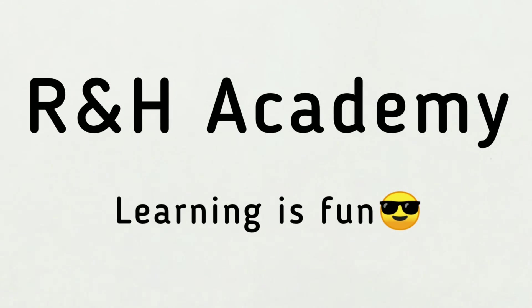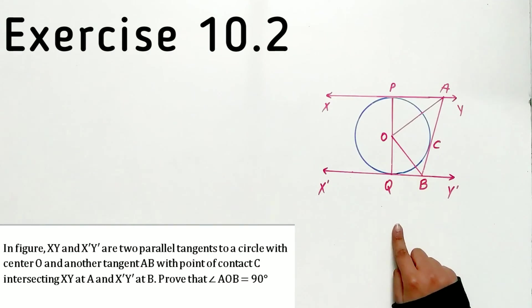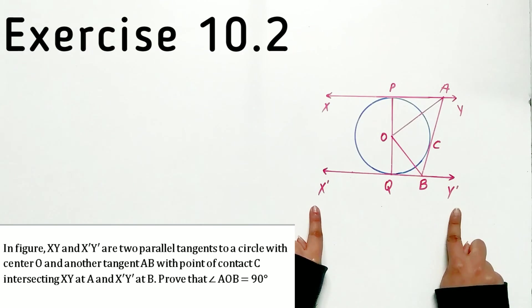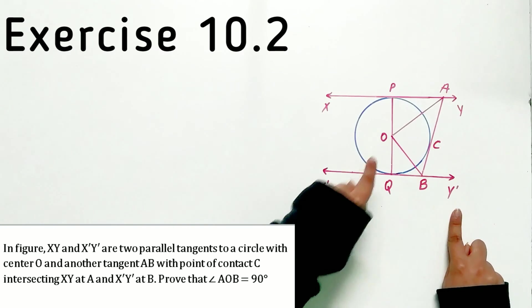Welcome to R&H Academy channel. Question 9 of exercise 10.2 says in figure XY and X'Y' are two parallel tangents to a circle with center O.